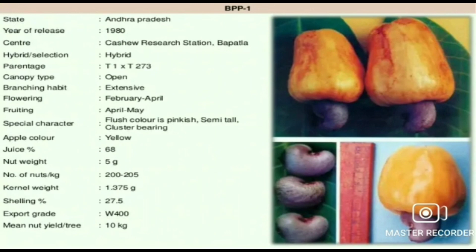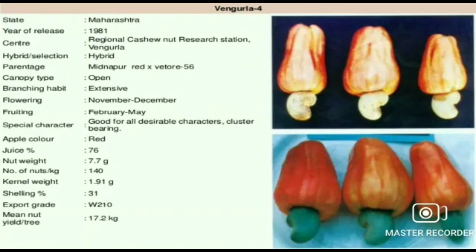Vengurla 4 variety is introduced in the state of Maharashtra in the year 1981. Canopy type is open. Shelling percentage is 31%. Export grade is W210. Kernel weight is 1.91 grams. Nut weight is 7.7 grams. Mean nut yield per tree is 17.2 kg.